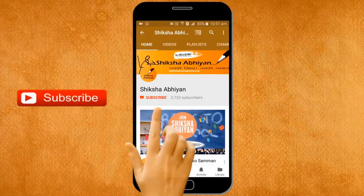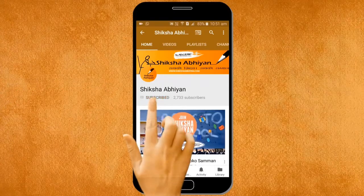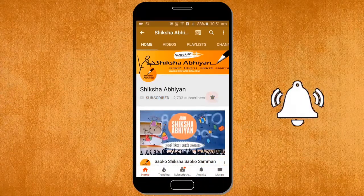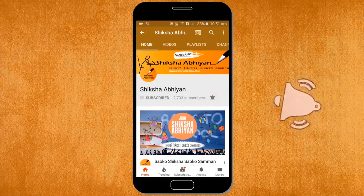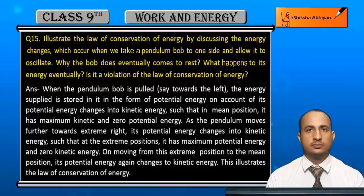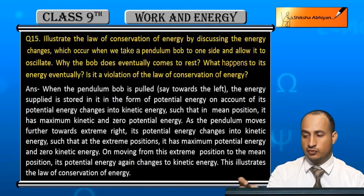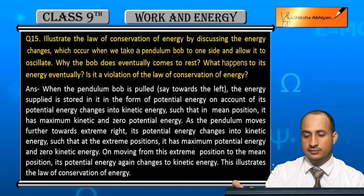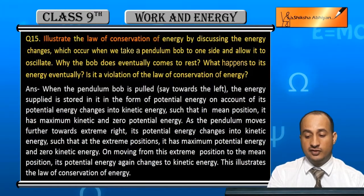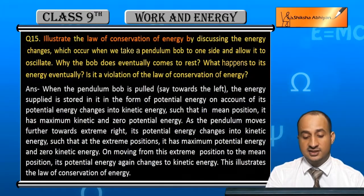Subscribe to our channel by clicking the subscribe button, click the bell button and enjoy the latest uploads from our channel. Now students, see the 15th question: illustrate the laws of conservation of energy by discussing the energy changes which occur when a pendulum bob is moved to one side and allowed to oscillate.